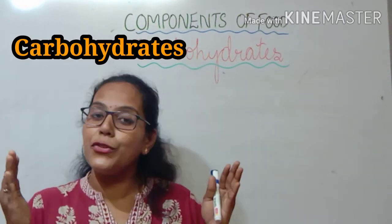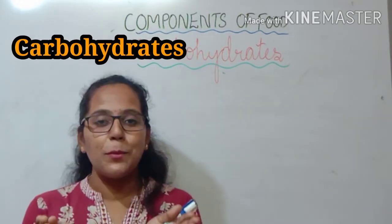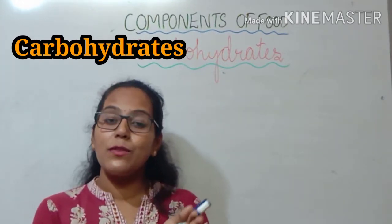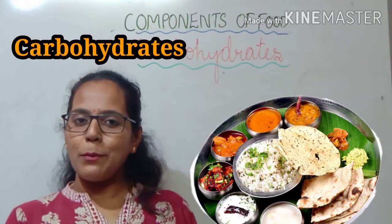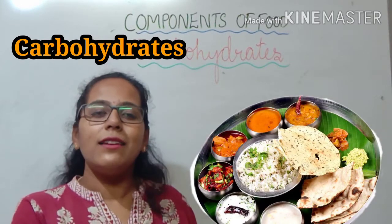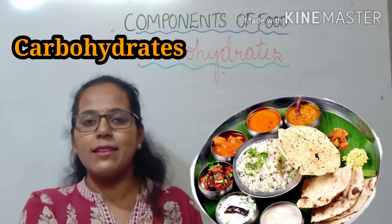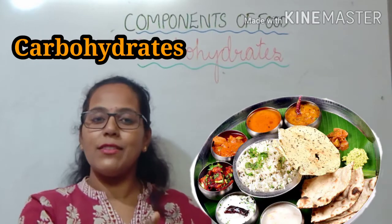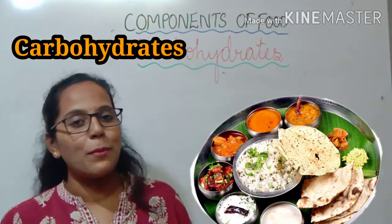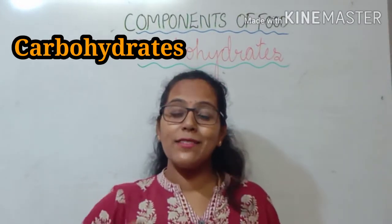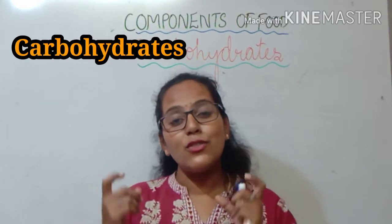Before learning more about carbohydrates, you should know that each variety of food present in your plate contributes its own special type of nutrient. For example, your plate may have rice, chapati, vegetable curry, and dal. All these different varieties of food contribute their own type of nutrient, which is essential for your body.